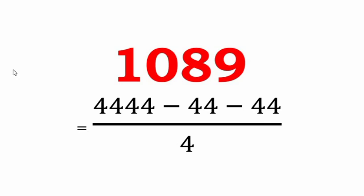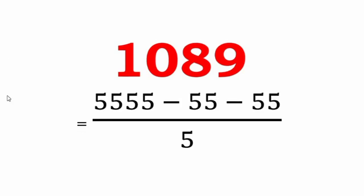4444 minus 44 minus 44 minus 44, whole divided by 4, equals 1089 — this representation uses only the digit 4 and the concept of fraction. It is also possible to represent 1089 using only the digit 5: 5555 minus 55 minus 55, whole divided by 5.